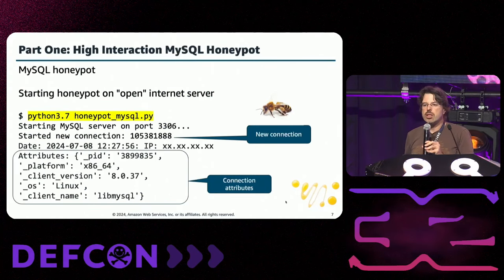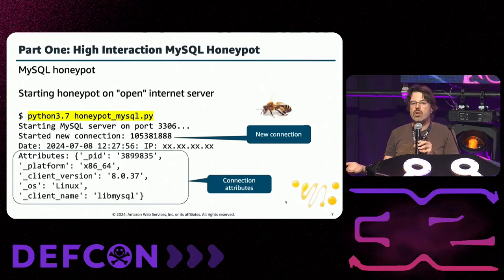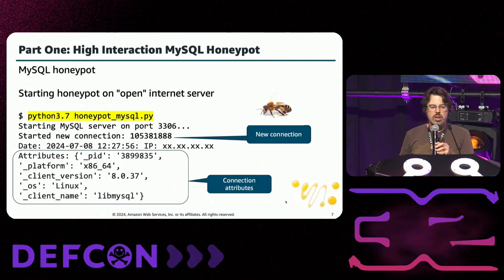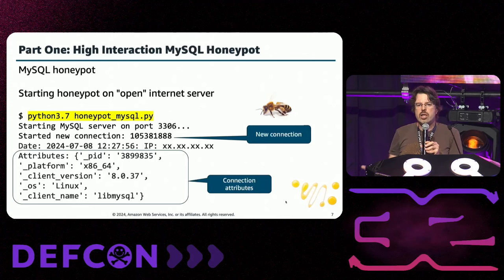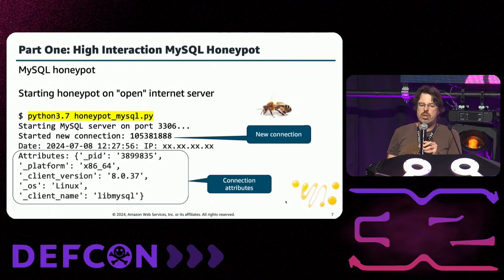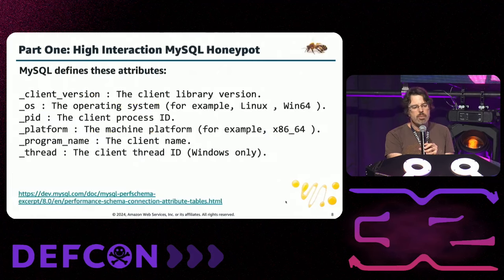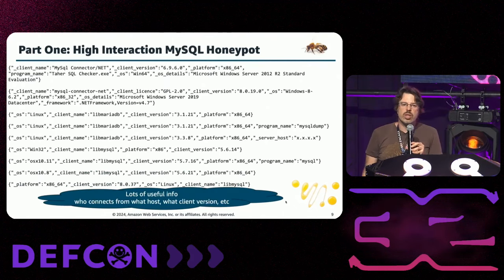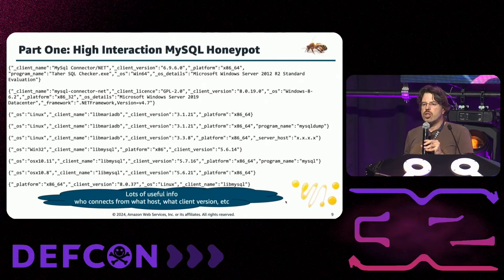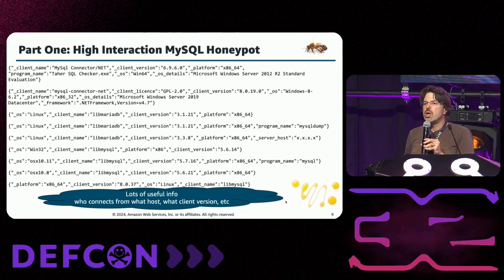We started the honeypot and we began receiving connections. You start the honeypot as a fake MySQL server on an open port from the internet, and you start receiving connections. You can see a lot of information about each connection. Like the HTTP protocol, MySQL protocol also has client version recorded — this is called attributes. MySQL provides lots of attributes as part of the connection: client version, OS, PID, and more. We immediately see the fingerprints including the version of the client library and the operating system.